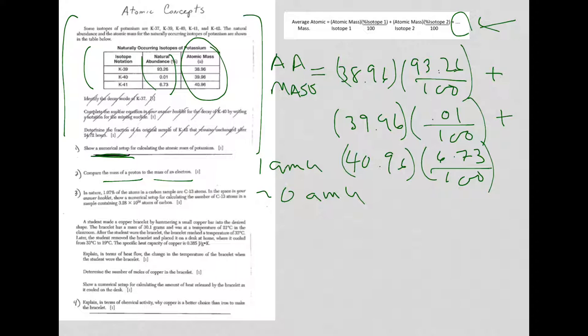Question 3 is kind of interesting. I haven't seen a question like this very often. In nature, we have 1.07% of the atoms in a carbon sample that are carbon-13 atoms. In the space provided in your answer booklet, show a numerical setup for calculating the number of carbon-13 atoms in a sample containing 3.28 times 10 to the 24th atoms of carbon.